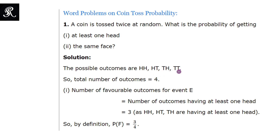HT, TH, and TT. Our first question is we need to find the probability of getting at least one head in this experiment. The number of favorable outcomes for event E — here we are taking E as an arbitrary label.